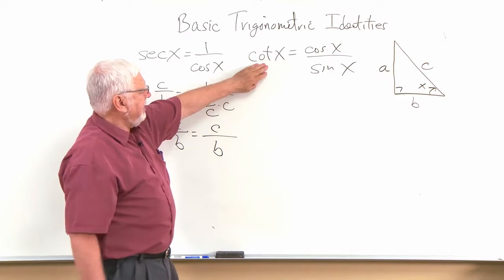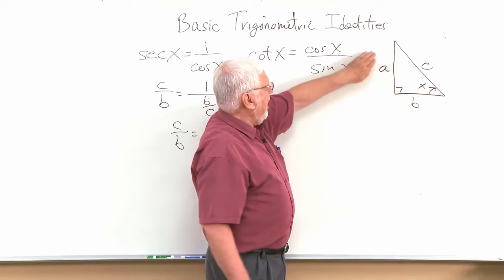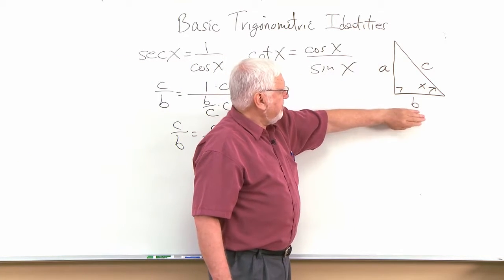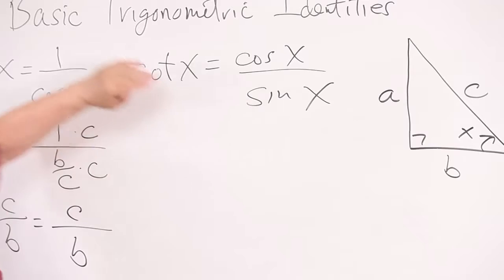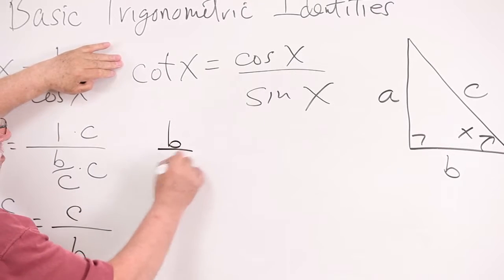Cotangent is the reciprocal of the tangent. So the tangent is opposite over the adjacent. So this would be adjacent over the opposite. So this is going to be b over a.